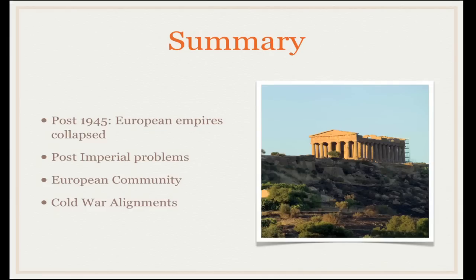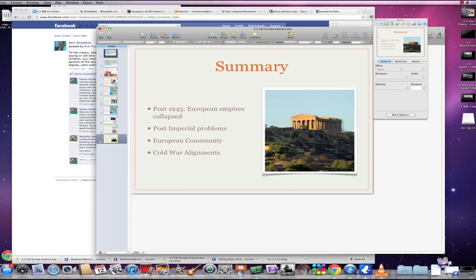In summary, after 1945 the world dramatically changed as the European empires collapsed. There were post-imperial problems: many colonies had underdeveloped economies, and there were artificial boundaries — particularly in Africa. The European Community formed and Europe became essentially peaceful after the Second World War, following centuries of constant warfare. A key question remained: would newly independent countries align with the United States or the Soviet Union, and how would this dynamic shape the Cold War?